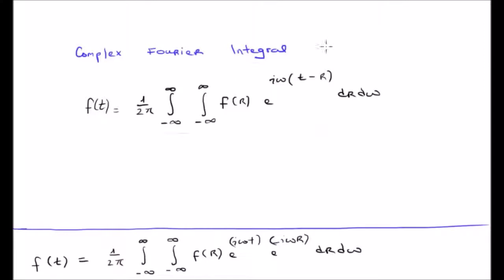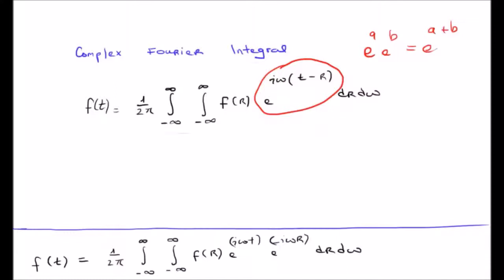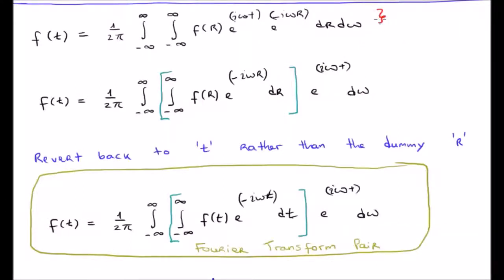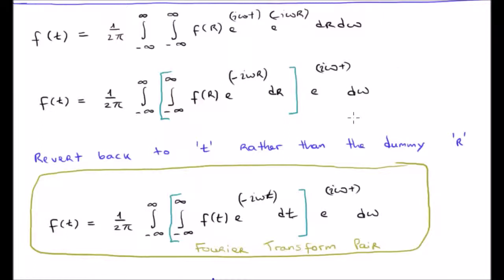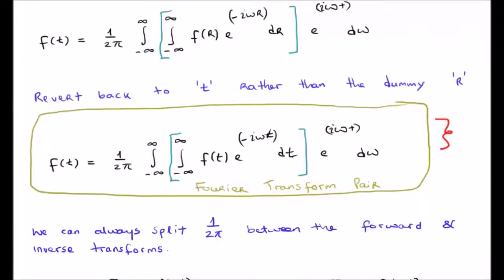The first thing we need to do is split our complex exponential. We know the exponential function has the property e^{i·omega·(t-r)} = e^{iωt} · e^{-iωr}. So we rewrite our complex Fourier integral, bracketing off the integral with respect to r. Importantly, the exponential e^{iωt} is not a function of r and can come outside of that integral. Finally, reverting back to the variable t rather than the dummy variable r, what we get is the Fourier transform and the inverse Fourier transform as a Fourier transform pair.